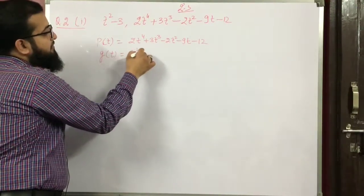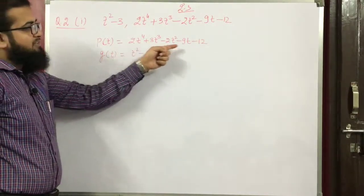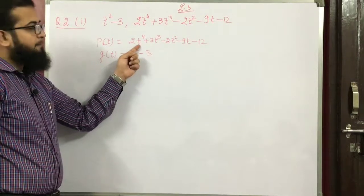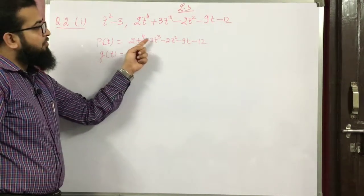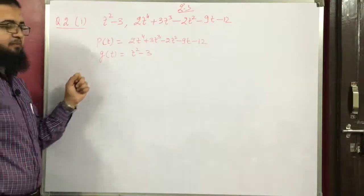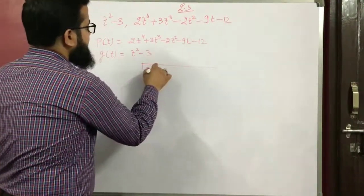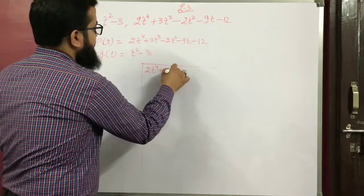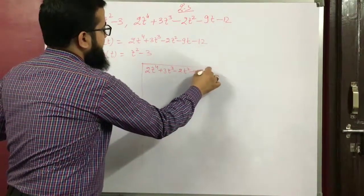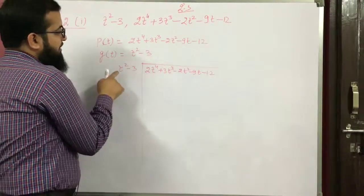Degree check: ascending or descending order of powers — 4, 3, 2, 1, 0 — no problem. Now divide: 2t⁴ plus 3t³ minus 2t² minus 9t minus 12 by t² minus 3.